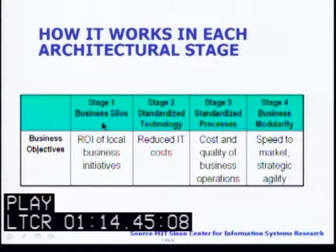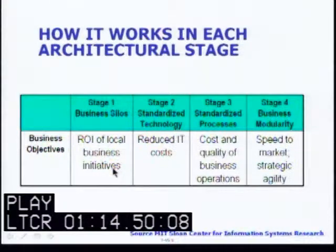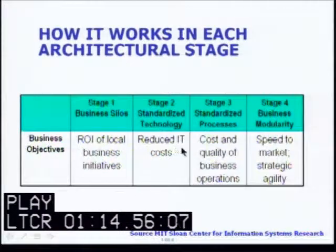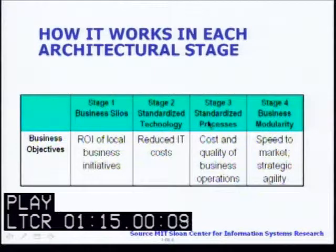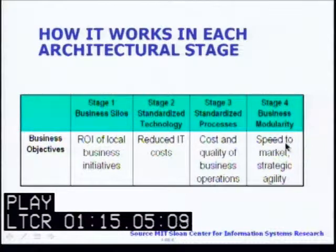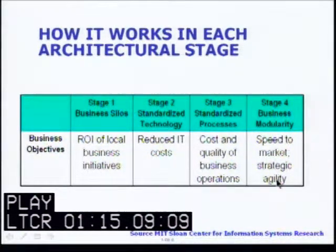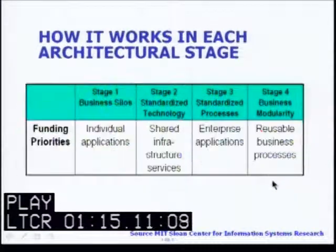When we look at business objectives: stage one, business silos, looks at the return on investment of local business initiatives; stage two, standardized technology, looks at reduced IT costs; stage three, standardized processes, looks at cost and quality of business operations; and stage four, business modularity, looks at speed to market and strategic agility.